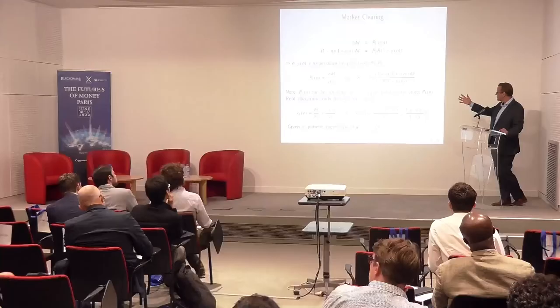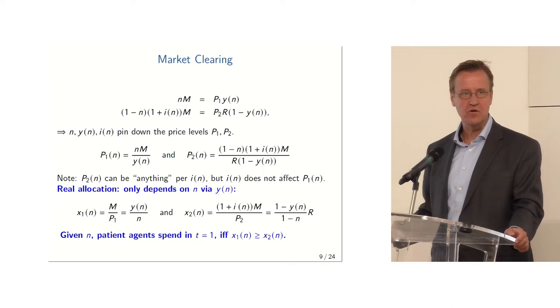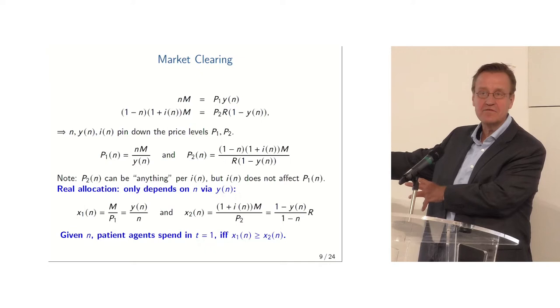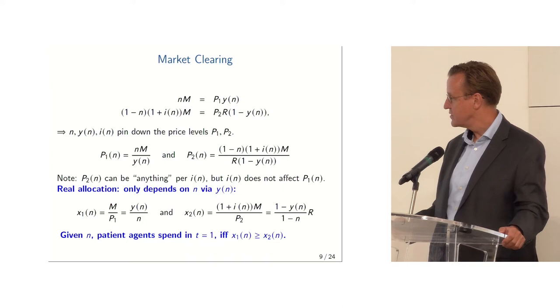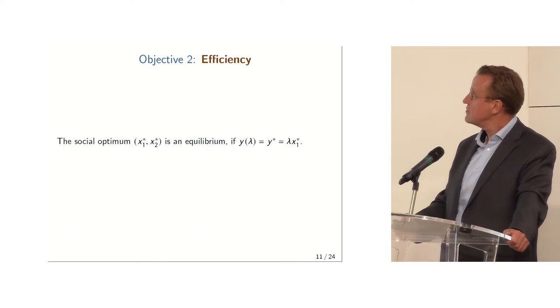For the real allocation, money is just a veil. If you take total spending and divide by the price level, N agents just split the liquidated portion among themselves. So X1(N) is just the total real liquidated portion Y(N) divided by N. A similar formula holds for period two. The real allocation is entirely driven by the real liquidation policy. Therefore, given N, patient agents spend in T=1 if X1(N) is bigger than or equal to X2(N).